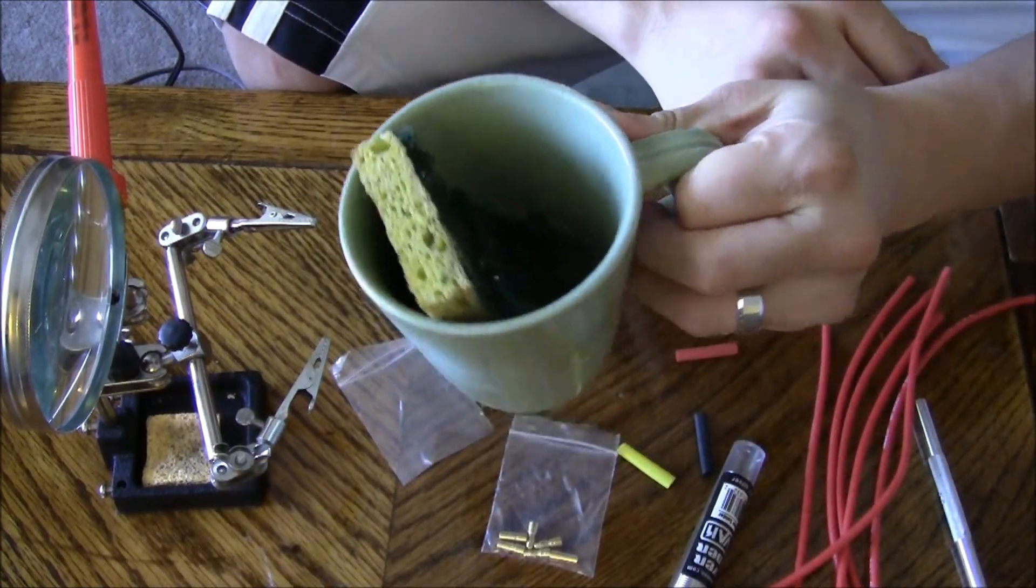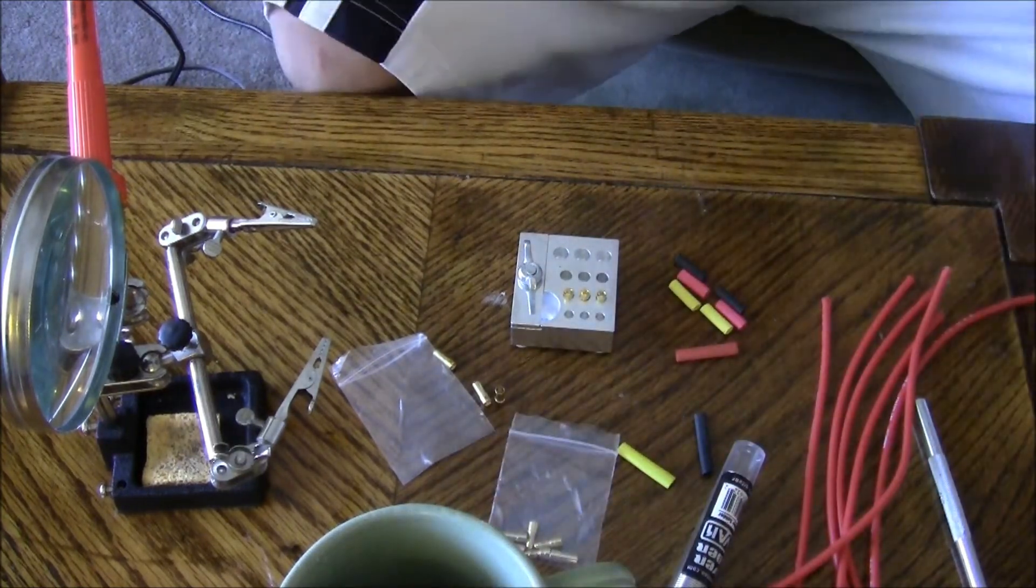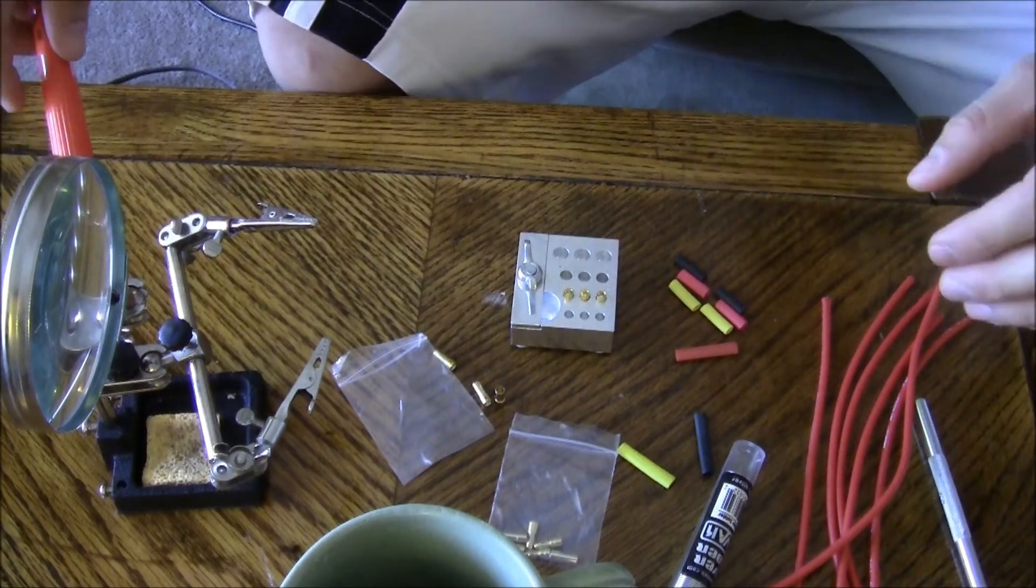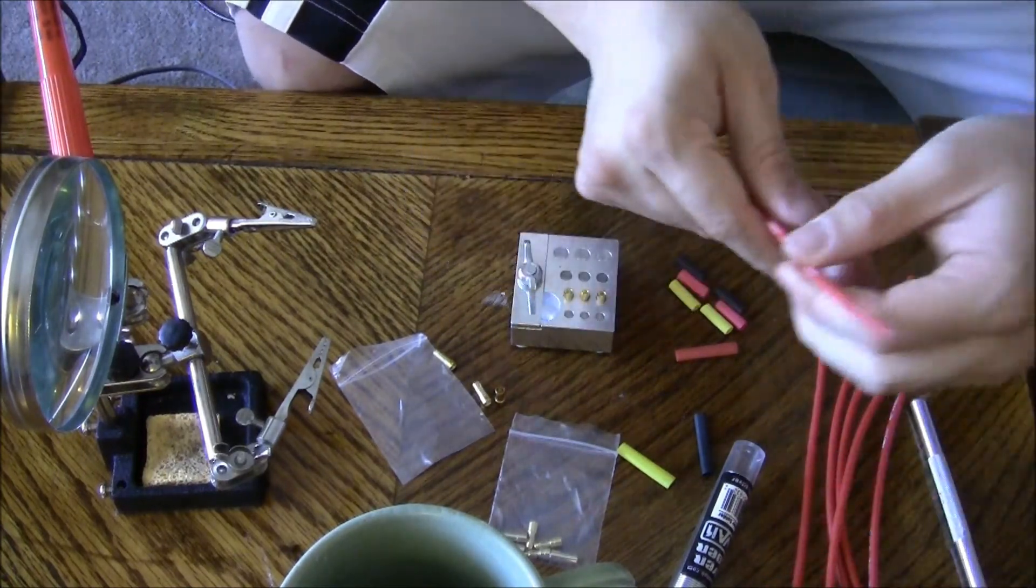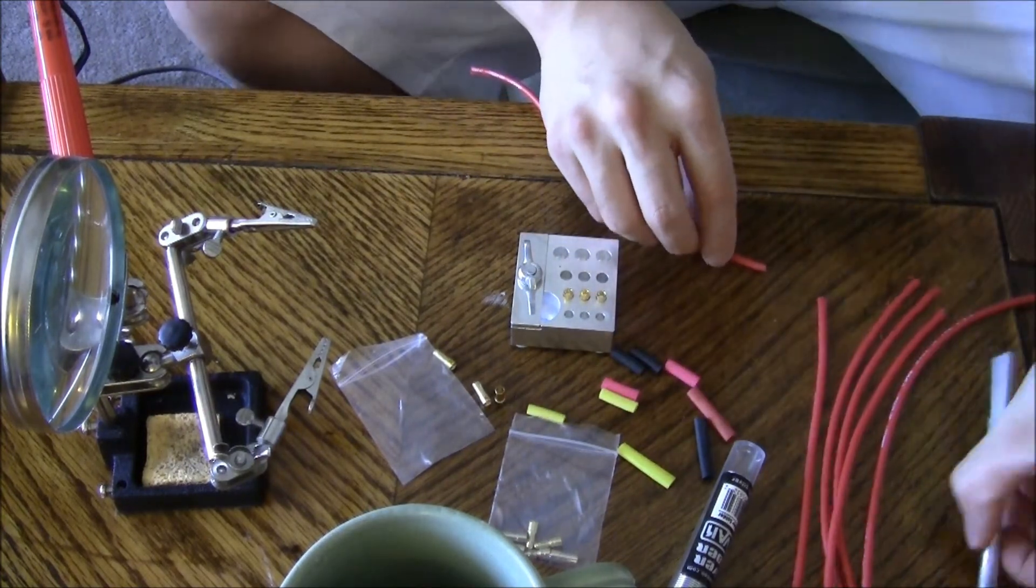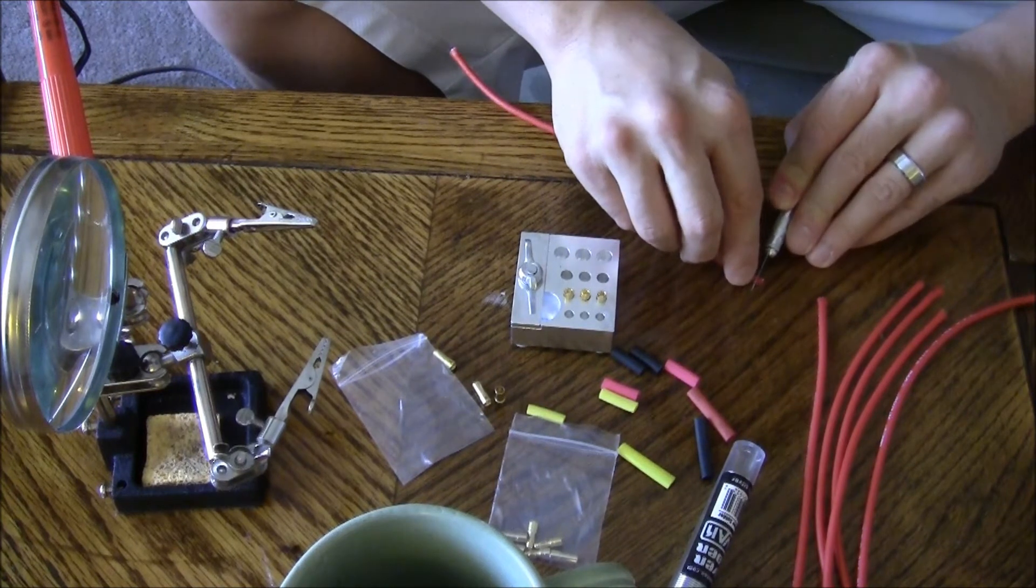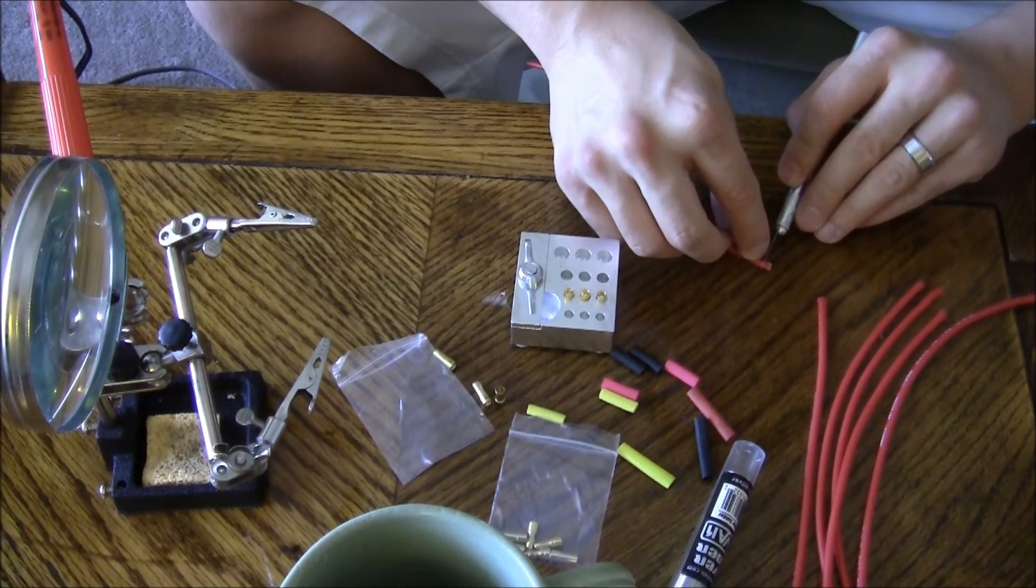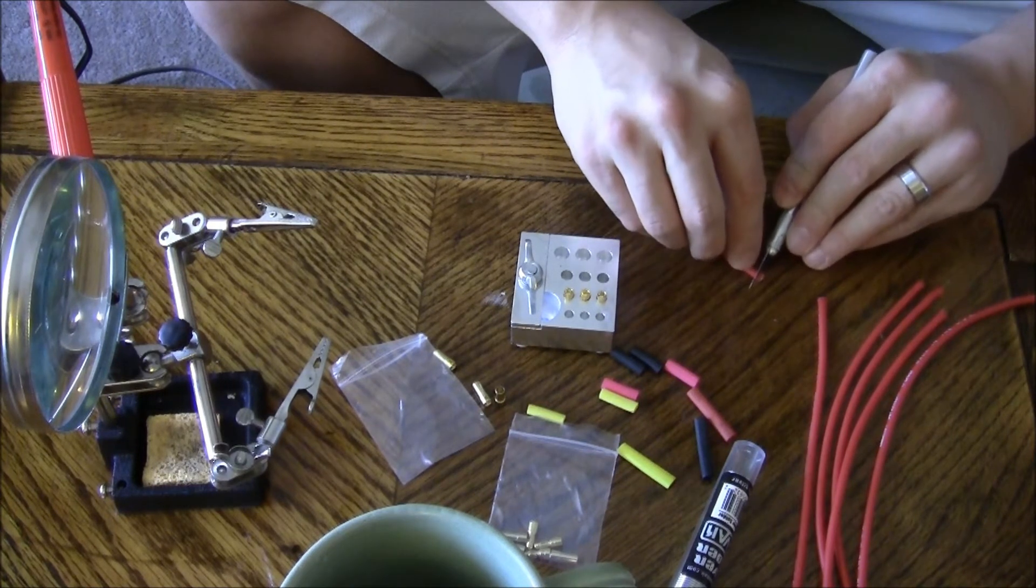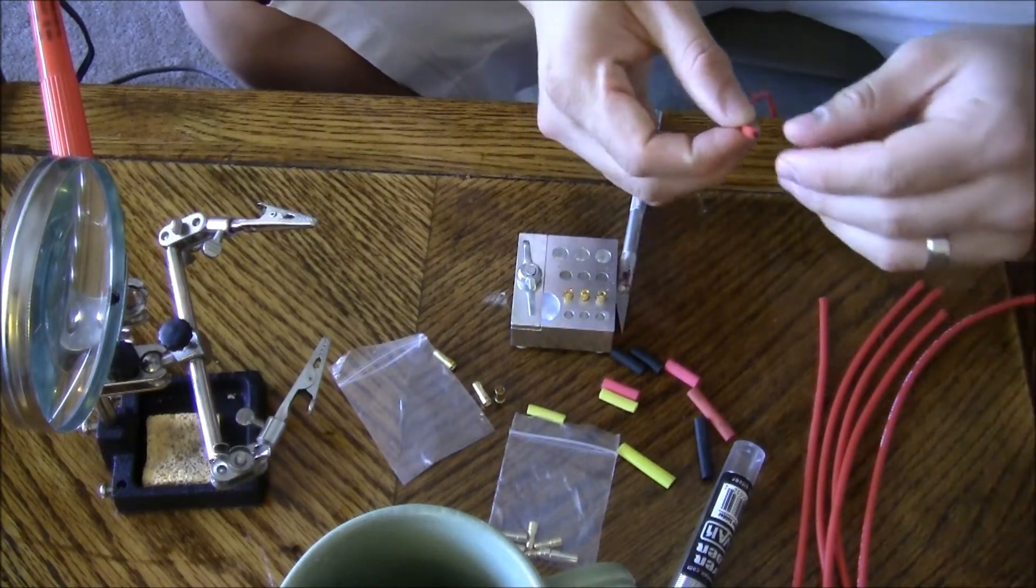Before we do that, let's go ahead and prep our wires. What we're going to do is take our exacto knife and cut about a millimeter to two millimeters off the sheath. Just roll it, and it cuts it really nice. You just take it off like that, it just comes right off.